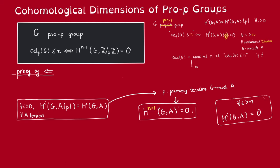Now we want to be able to replace n+1 with any i greater than n. We use a technique we have mentioned before: when we compute the cohomological dimension of Ẑ, we will use dimension shifting. Sorry, I mean when we compute the cohomological dimension of Ẑ, not Z.